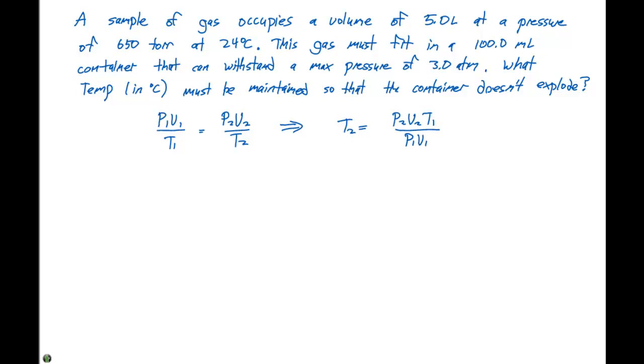The initial set of conditions that we're going to look at are 5.0 liters, 650 Torr, and 24 degrees Celsius. Our second set of conditions are 3.0 atmospheres and 100.0 milliliters.